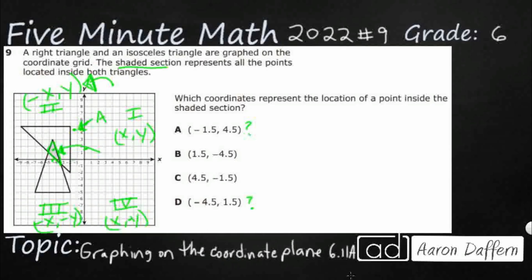So negative 4.5 is right there. And a positive 1.5 is right there. So you mash them together. And there you go. Yep, that looks like that's going to be right what we need it to be. That's my D.